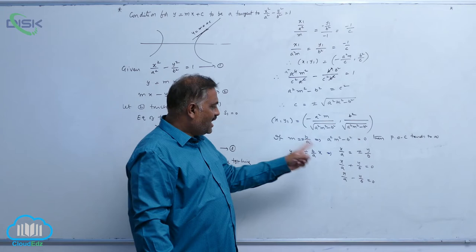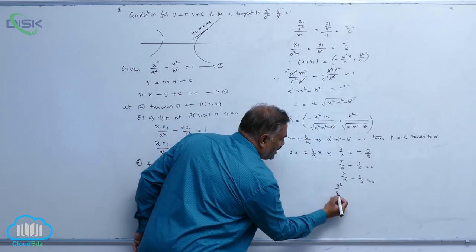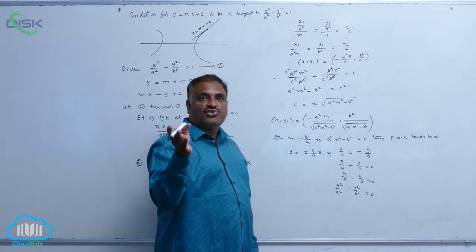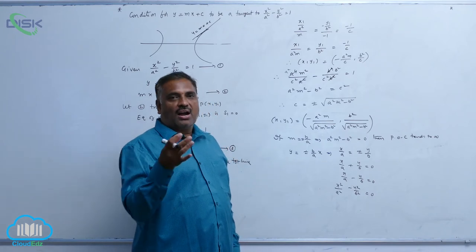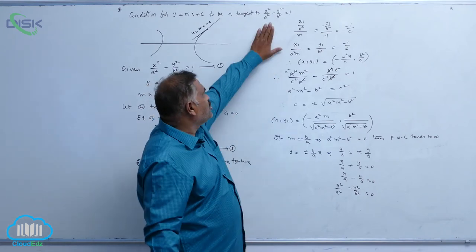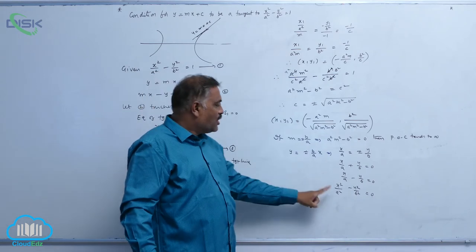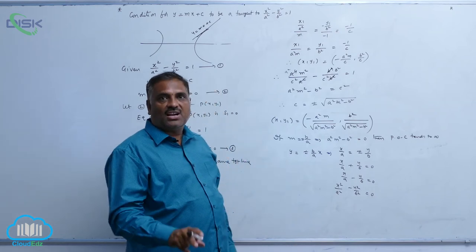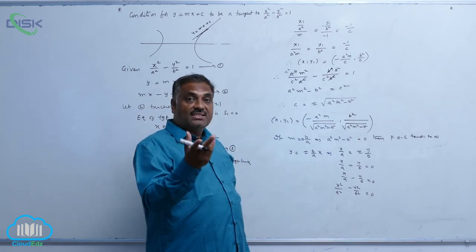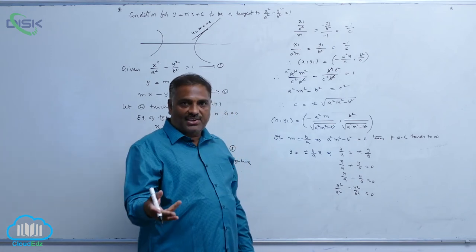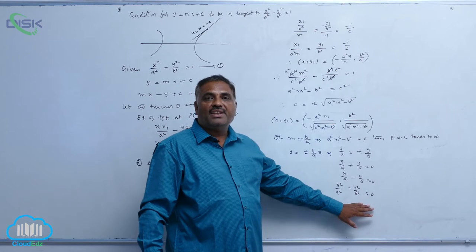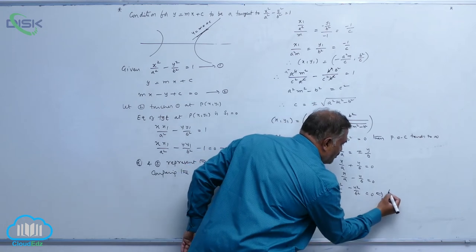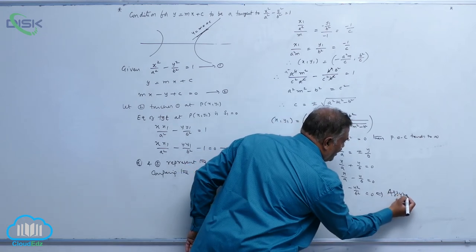Multiplying these two lines gives x²/a² - y²/b² = 0. They are a pair of straight lines passing through the center of the hyperbola and touching the curve at infinity. Since each line touches the curve it is called a tangent — specifically, a pair of tangents touching the curve at infinity. That is why they are called asymptotes.